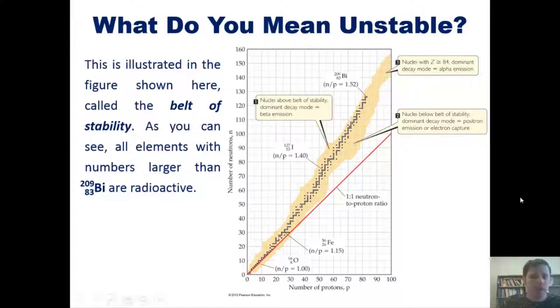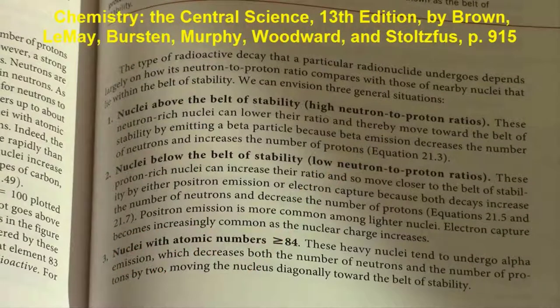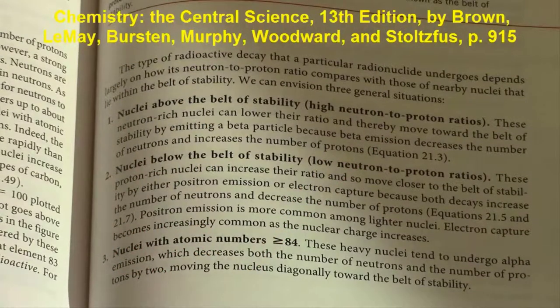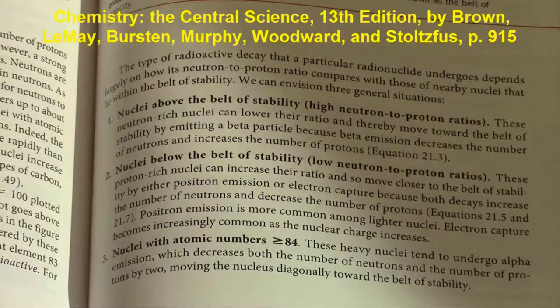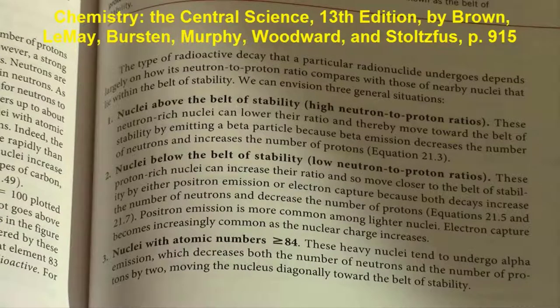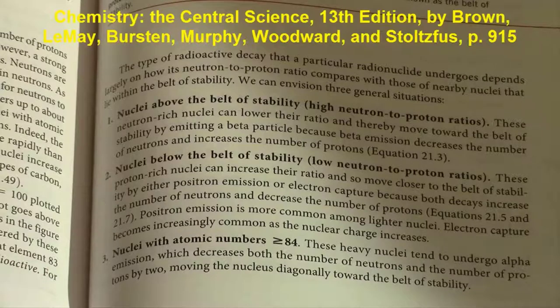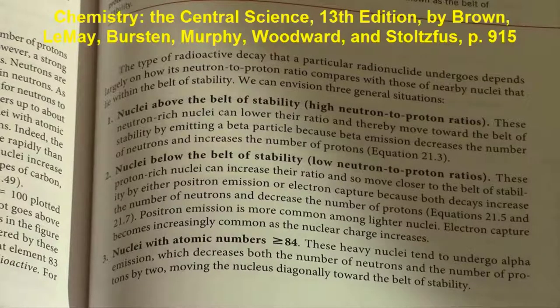Elements shown down here below the belt of stability have a preferred decay mode of positron emission or electron capture. We'll now continue by reading three bullet points from page 880 of our text. Nuclei above the belt of stability have a high neutron to proton ratio. These neutron-rich nuclei can lower their ratio and thereby move toward the belt of stability by emitting a beta particle.